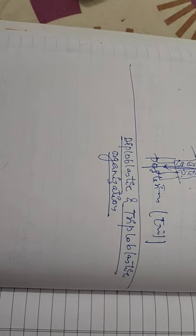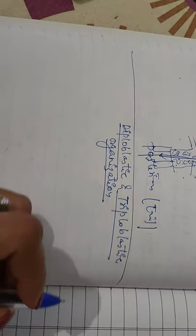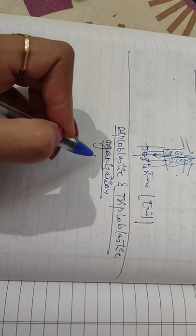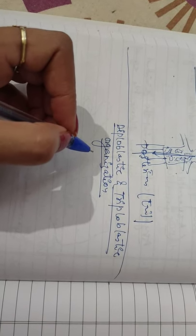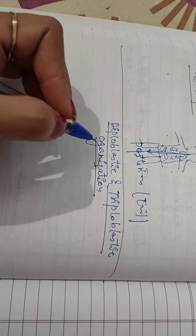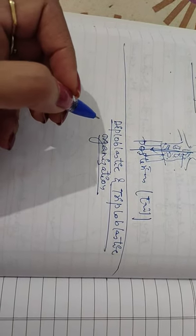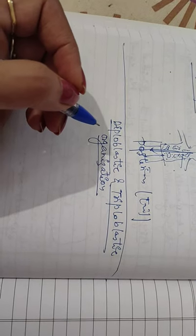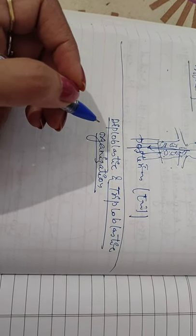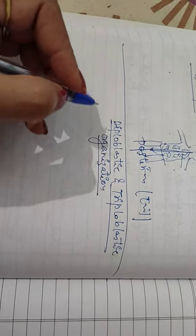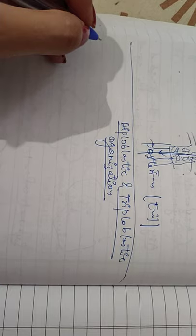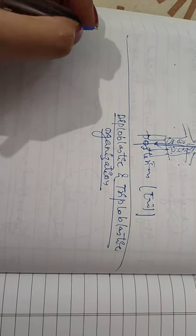Hello students. In this video I am going to tell you about the diploblastic and triploblastic organization, as well as I am going to explain body cavity that is coelom, and metamerism — also called segmentation — and development. First of all we will see about the diploblastic and triploblastic organization.